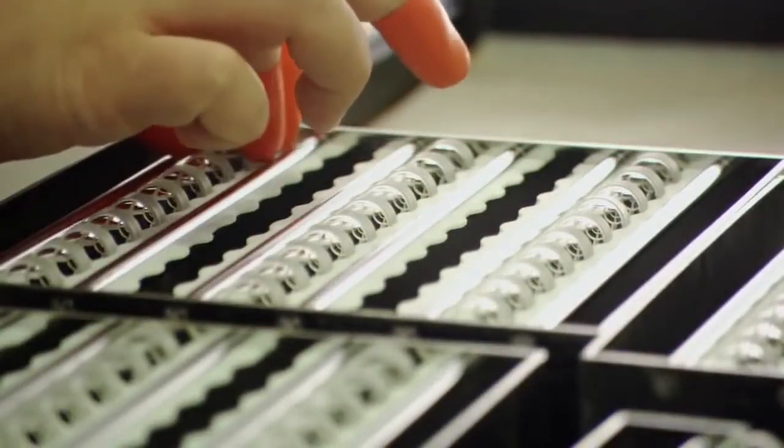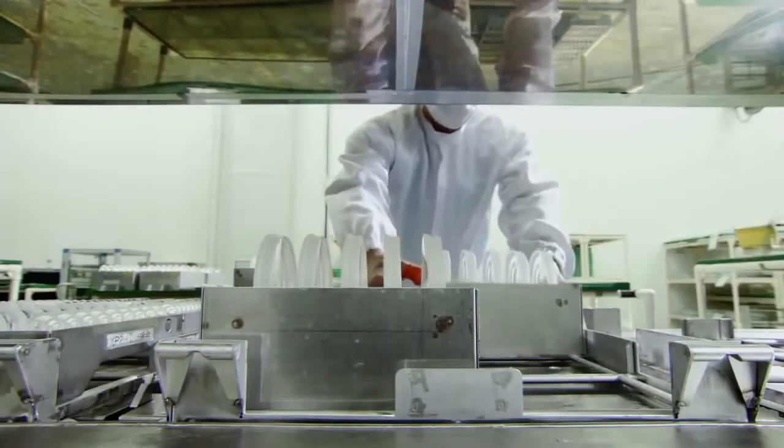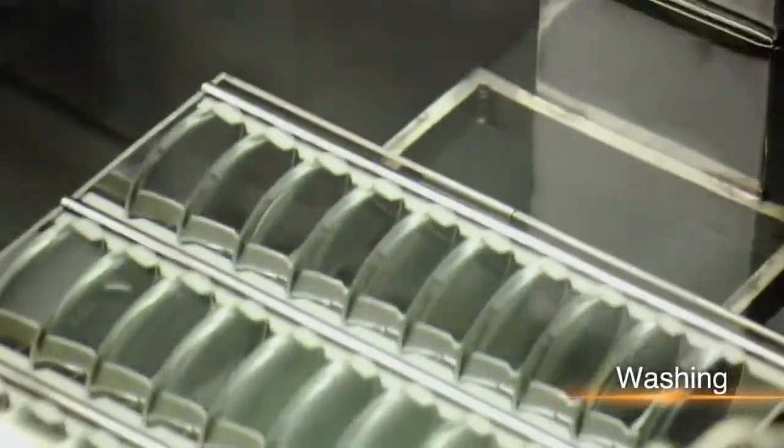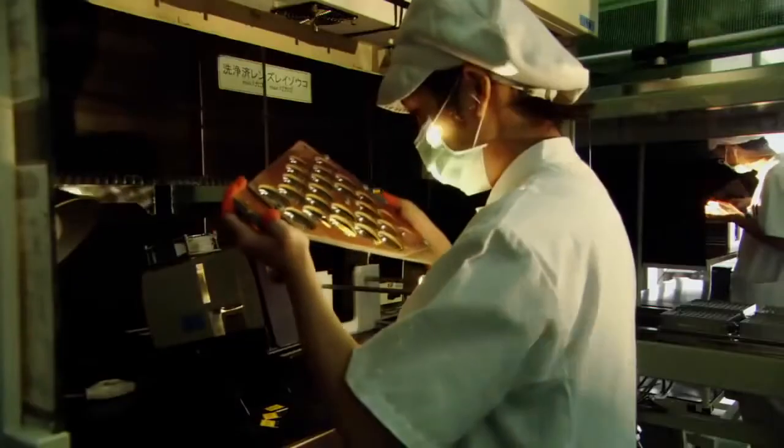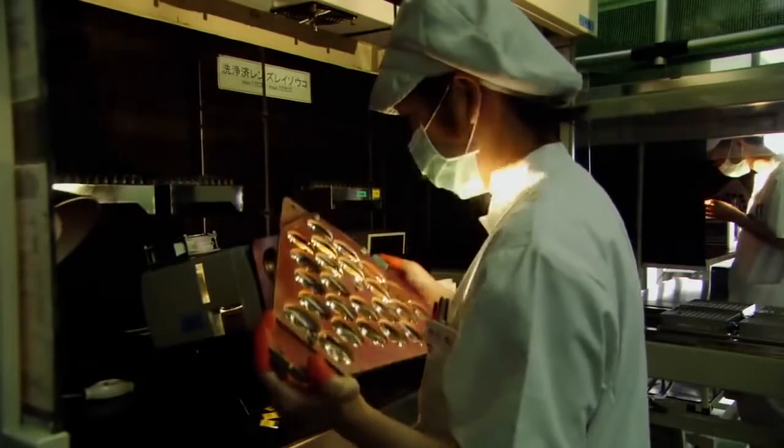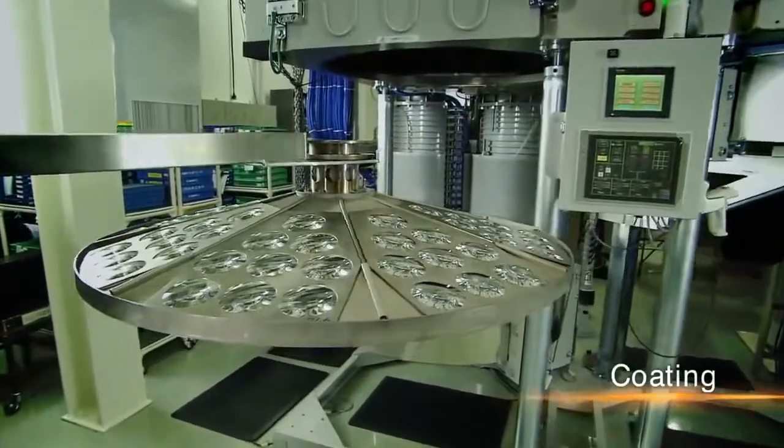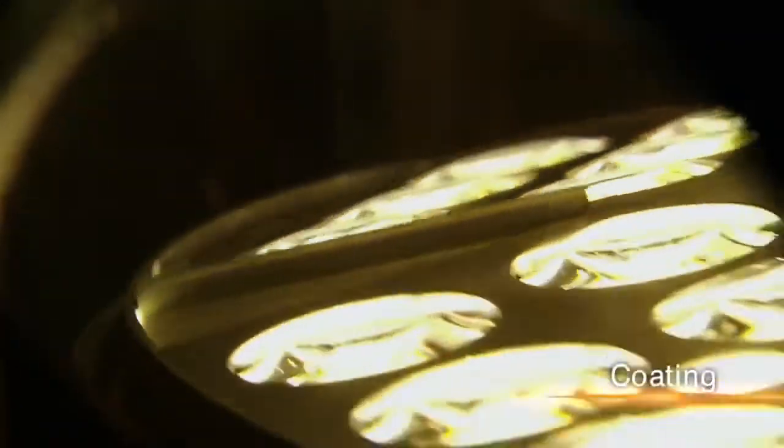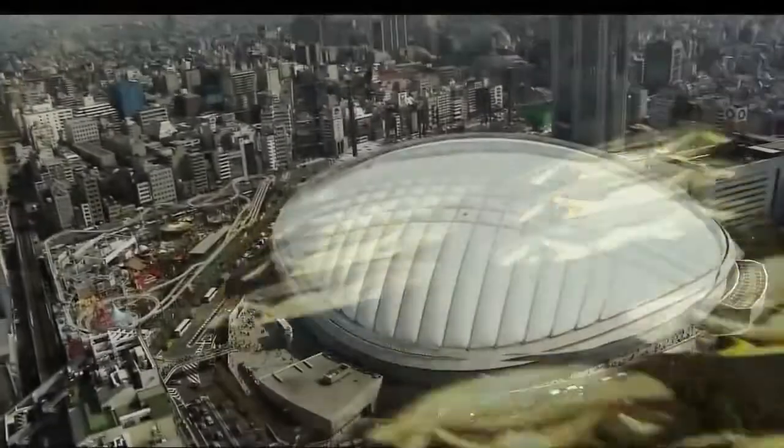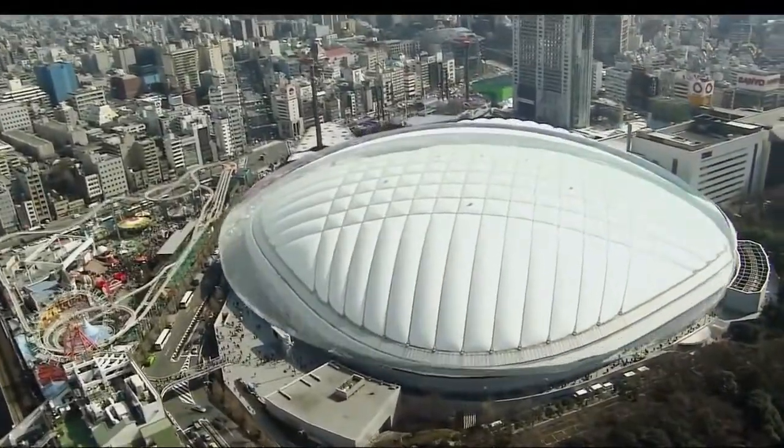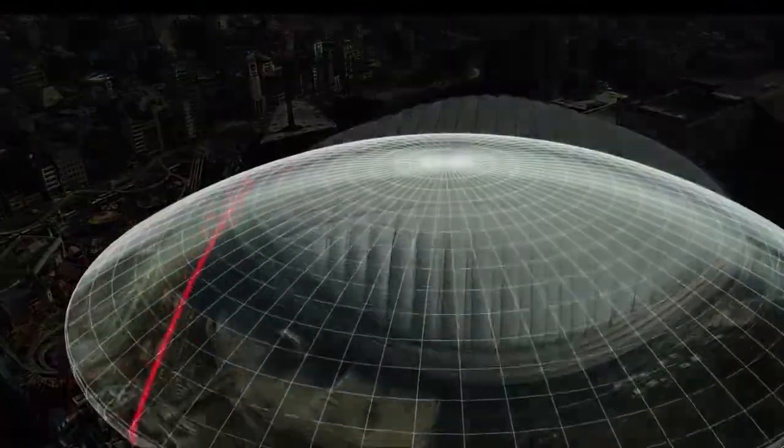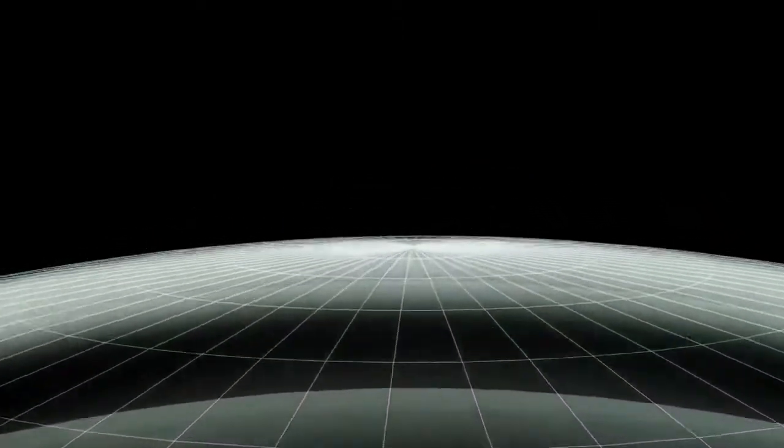Lenses are polished thousands of times and then washed. Following careful inspection, the lens surface is coated to reduce reflection and protect against scratching. The finished lens is so precise that if enlarged to the size of the Tokyo Dome stadium, the margin of error would be less than the thickness of a business card.